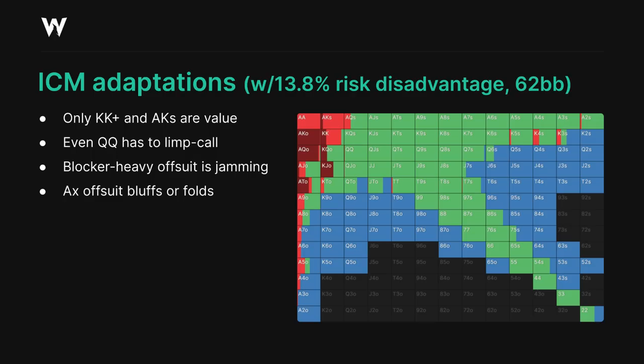Even queens and jacks are forced to just limp call here because getting it all-in against the big blind would be so damaging in this spot, and there are so many awkward spots which can happen if we limp 3-bet. In addition, many low card hands like deuces and 5-4 suited are forced to fold at some frequency, even if they seemingly have good equity versus the raising range, since they're going to really struggle to realize that equity in a postflop spot.